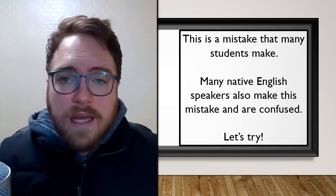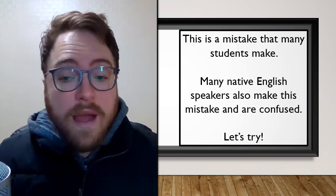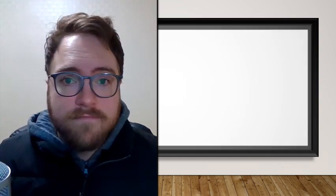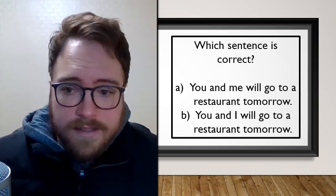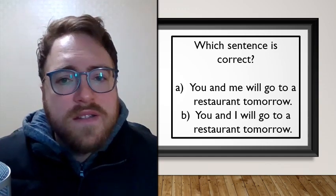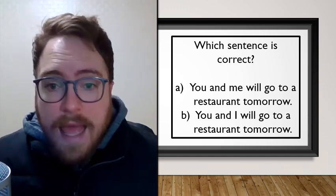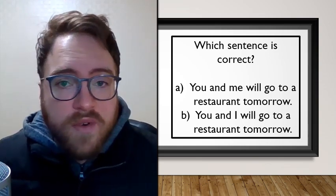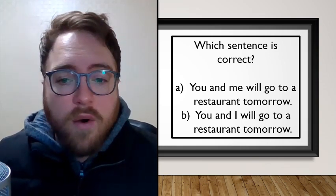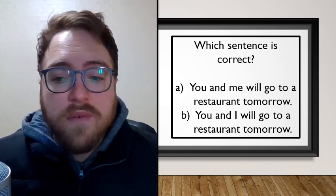Let's use these in a sentence and look at the correct way to use them. First, let's look at these two sentences. Which sentence do you think is correct? A: 'You and me will go to a restaurant tomorrow.' Or B: 'You and I will go to a restaurant tomorrow.'